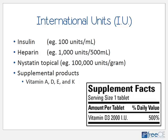Products like insulin, heparin, some hormones, nystatin, and some supplemental products have a different way of measuring drug strength than typical tablets, capsules, and liquids. Have you ever wondered why some medicines are measured in international units instead of milligrams or grams? Milligrams and grams measure mass or weight, whereas international units essentially measure the effectiveness of the active ingredient.